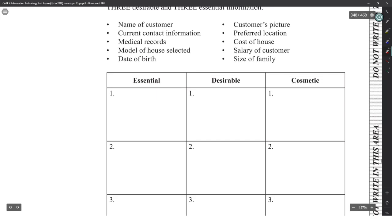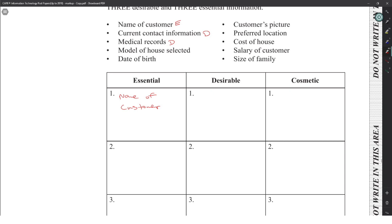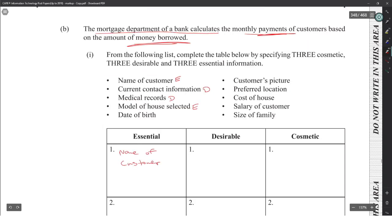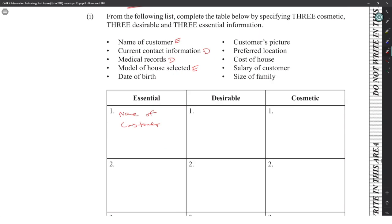Customer contact information is essential. Medical records are not really needed — maybe desirable at most. Model of house selected could be essential. Date of birth to calculate the mortgage term is desirable. Customer's picture is desirable — not needed for the calculation itself.